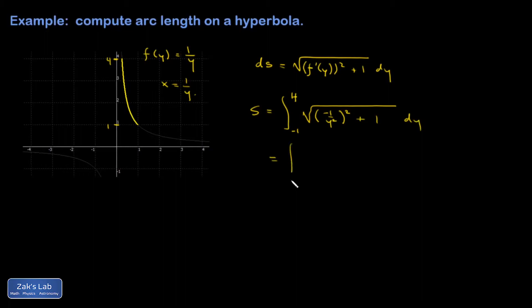and I end up with integral, oops, that's not a negative 1, that's a 1. And I end up with the square root of 1 over y to the 4th plus 1 dy.